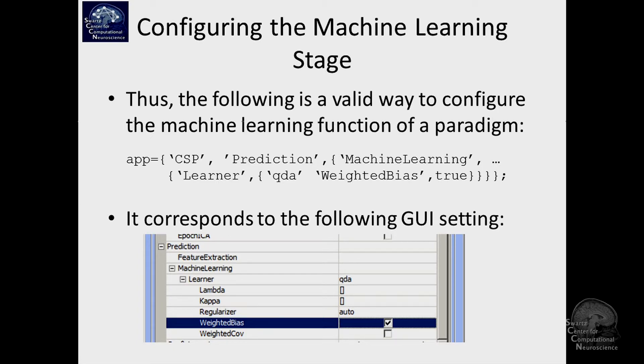If you wanted to replicate this kind of setting in the script, you would say I want to build an approach that uses the CSP paradigm, and under prediction, machine learning, learner, I want to set this to the QDA case like here, and I want to override also one of the subparameters here to true, weighted bias.